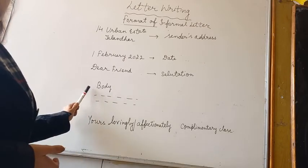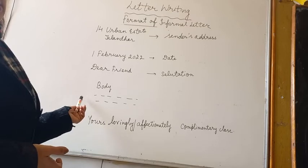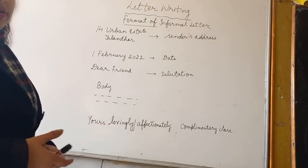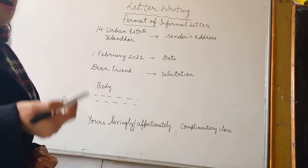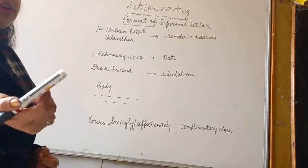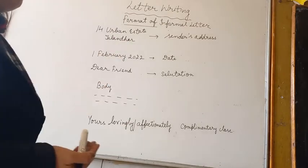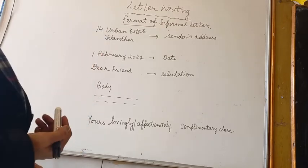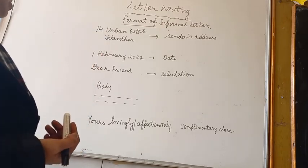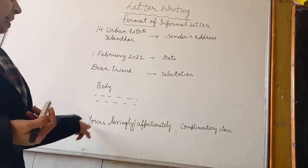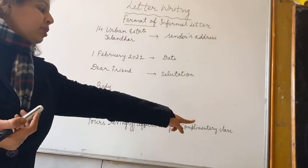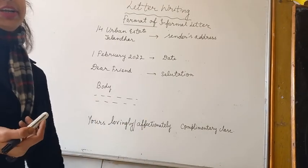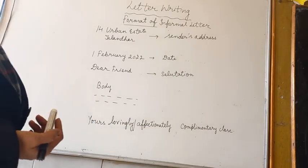Then after that, write the body. You can begin with something like 'I hope this letter of mine will find you in high spirits,' and then write the body according to the topic of the letter. Then after that you will write the complimentary close — yours lovingly or yours affectionately — and your name.